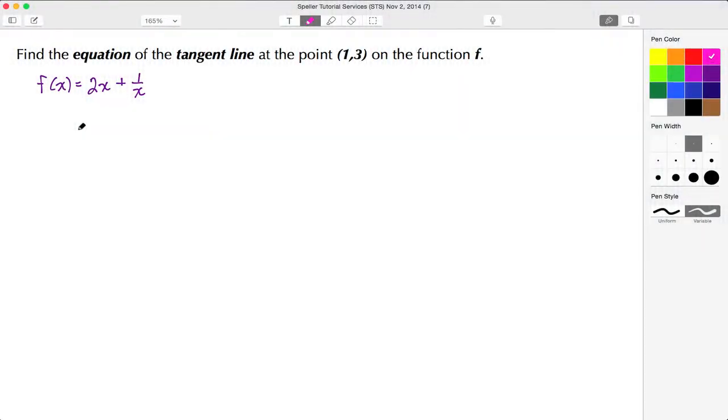Welcome back to STS. In today's tutorial we're going to find the equation of the tangent line at a specified point. That specified point is also called the point of tangency. In this particular example, that point's coordinates are (1, 3) and we're doing this on function f, where f(x) = 2x + 1/x.